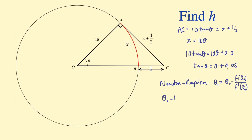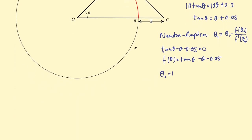What I need to do first is define this as a function of theta. Rearranging this equation, I can say that tan theta minus theta minus 0.05 is equal to 0. Then I can say that f of theta is equal to tan theta minus theta minus 0.05, and I'm looking for the zeros of this function. I also need f dash of theta. The derivative of tan theta is sec squared theta, and the derivative of theta is just 1. So f dash of theta is sec squared theta minus 1.